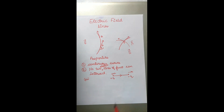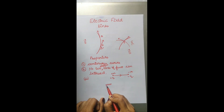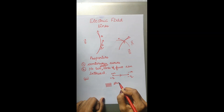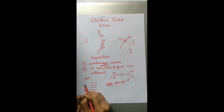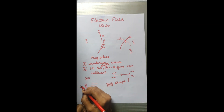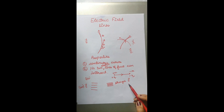The fourth property: if electric field lines are close to each other, it represents a stronger electric field. However, if they are far apart, it represents a comparatively weaker electric field. So the relative closeness of the lines of force indicates the strength of the electric field at different points.